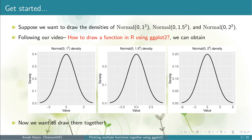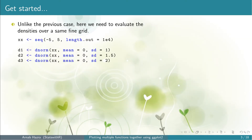Now we want to draw them together. When comparing multiple functions, we need to plot them over the same interval. Here we consider an interval between minus 5 and plus 5 and create a fine grid xx of length 10,000. Next, we evaluate the three normal density functions over this x-axis and store the outputs into vectors d1, d2, and d3 respectively. Now we just need the vectors xx, d1, d2, and d3.